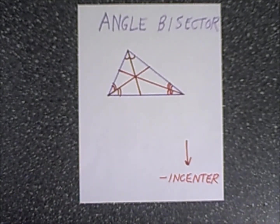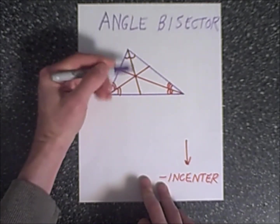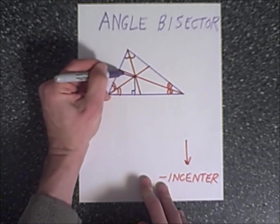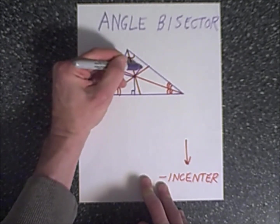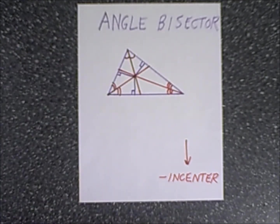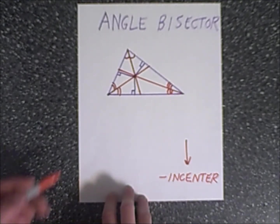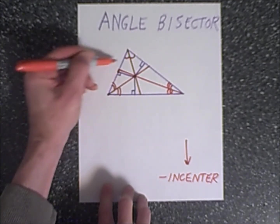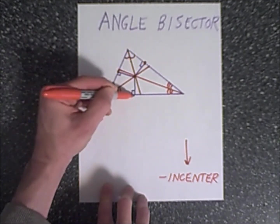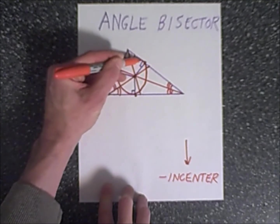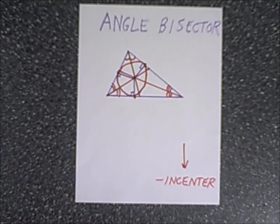The incenter is aptly named. If you take the distance from the incenter to every side — drawing a perpendicular line to each side — you get three congruent segments. Three congruent segments from the same center point means they could be radii of a circle. So you can inscribe a circle where the incenter is the center of that circle.